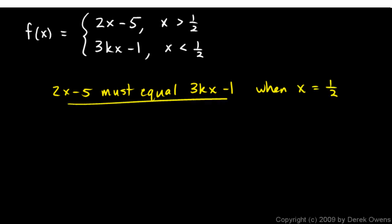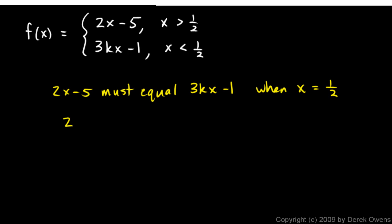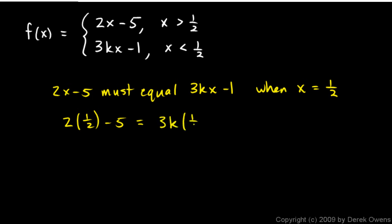So that's easy, just take that idea and write it as an equation. You're just going to write 2, and then I'm going to plug in 1 half for x. 2 times 1 half minus 5 equals 3k times 1 half minus 1.